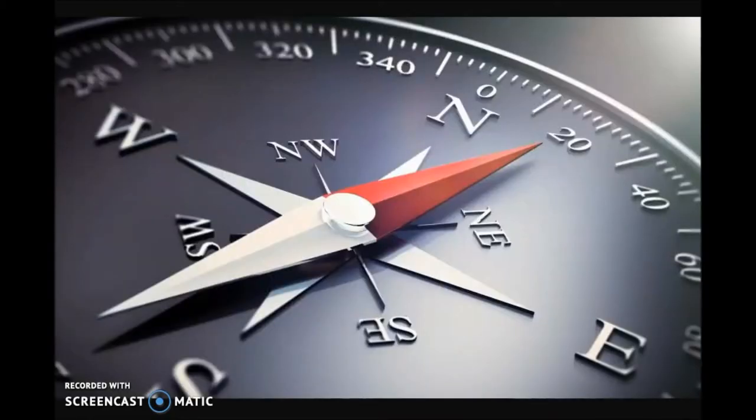A compass is designed to interact with the magnetic field of the Earth. The magnetized needle lines up with Earth's invisible magnetic fields. Since opposite poles attract, the north-seeking magnetic pole of the compass needle is oppositely charged with the north magnetic pole of the Earth.